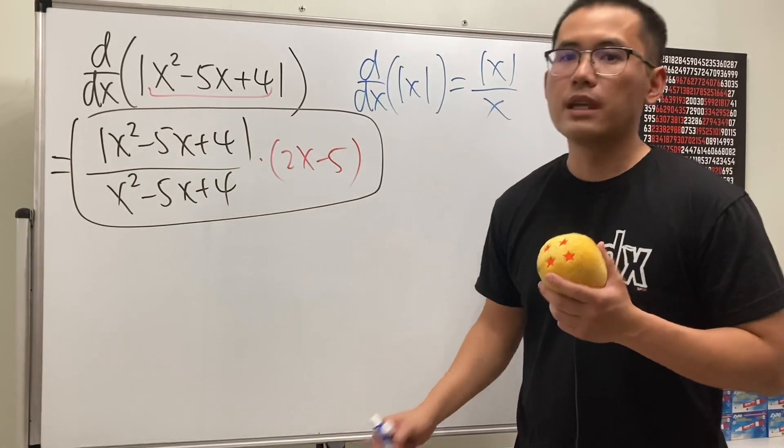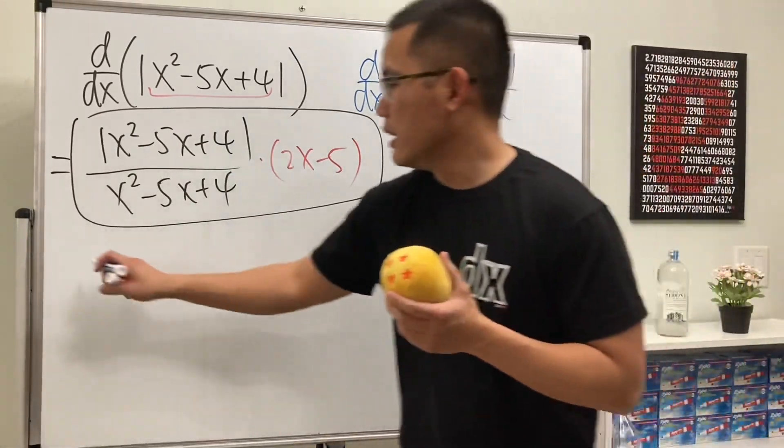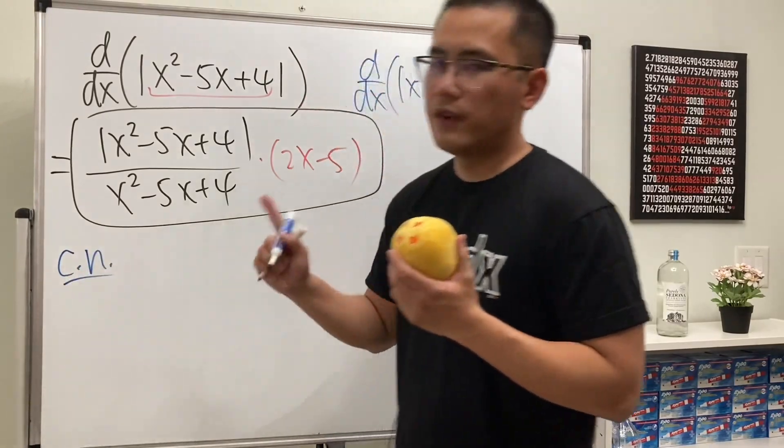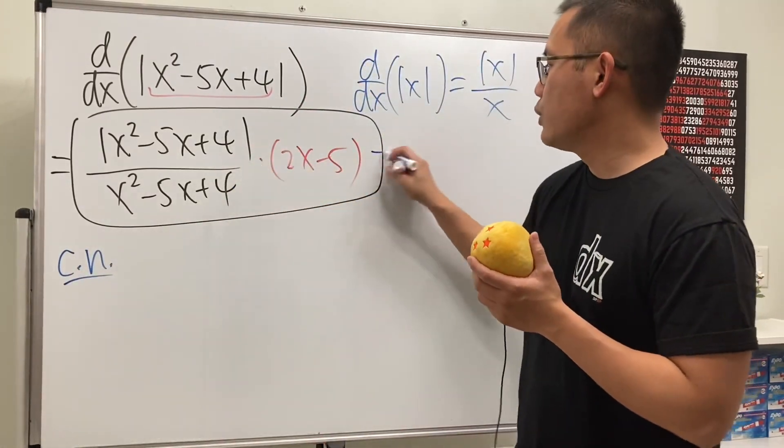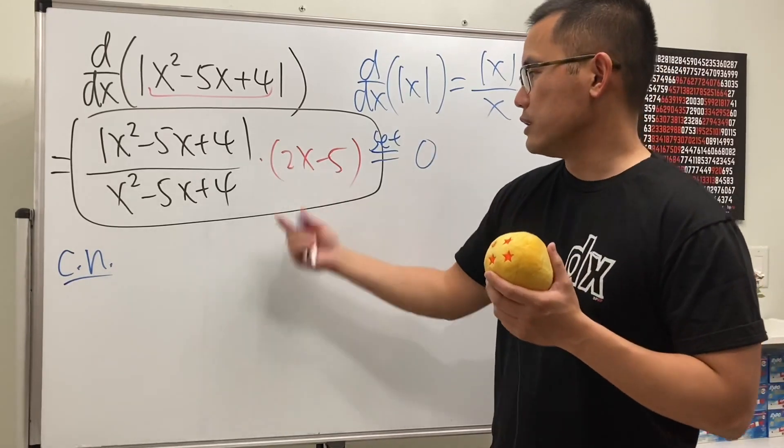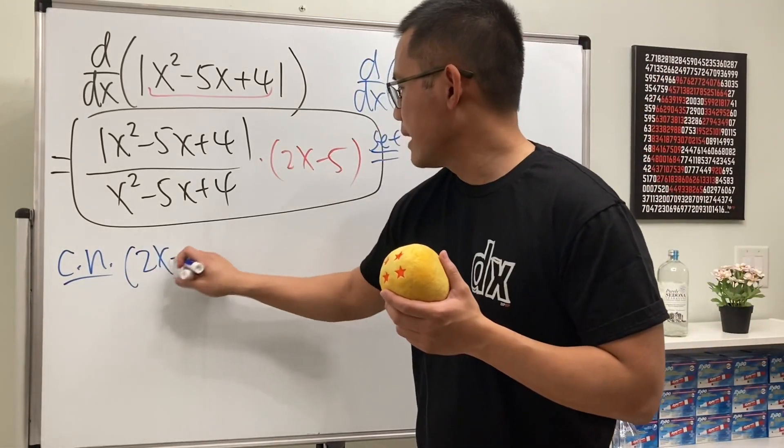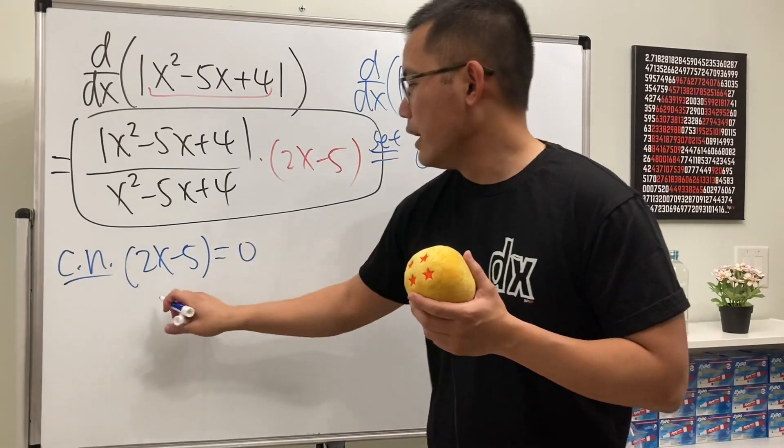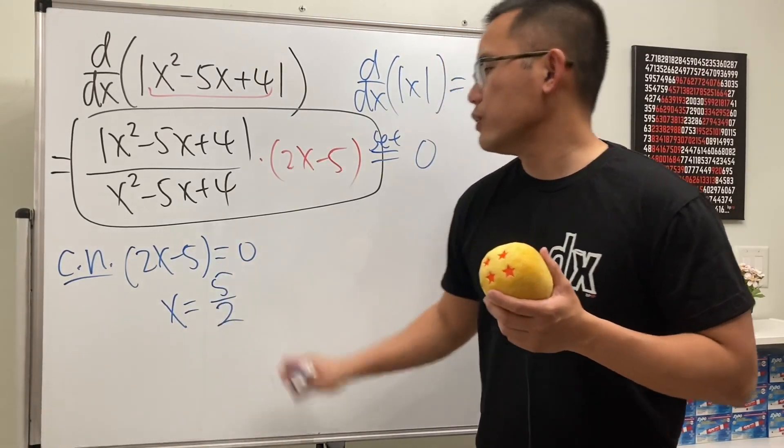And the reason I want to do this is because now we can find the critical numbers. So there are two cases that I want to consider. The first case is where the derivative is equal to 0. So we set this equal to 0, and the only way to make this equal to 0 is 2x minus 5 equal to 0, which tells us x is equal to 5 over 2.